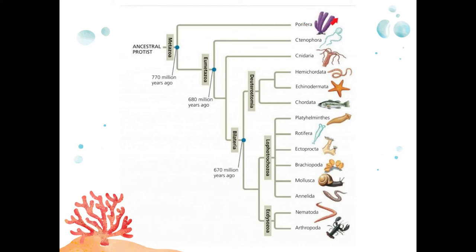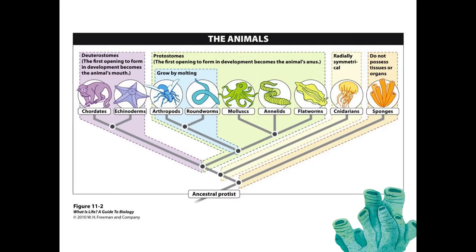The six phyla are: Porifera, Cnidaria, Platyhelminthes, Nematoda, Rotifera, and Annelida. This simplified phylogenetic tree provides additional details about these phyla. As you can see, sponges lack tissues or organs, but all other animals possess tissues and organs, though not all of them have three germ layers.